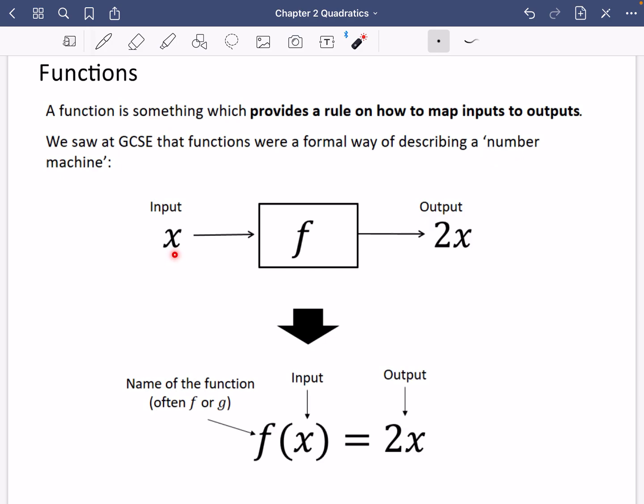You have an input x, which goes into some function machine f and you get some kind of output like 2x. How we actually write this is we say that the name of the function we put outside, we put an input inside some brackets and the output is what happens to that input number. In this particular case, the function is a doubling function or multiplying by 2.